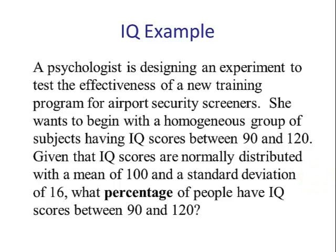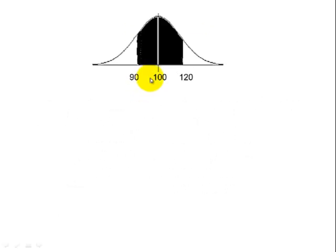Our first step is to draw a picture. Here's 90, there's 120, and we have a mean of 100. Now this is an in-between problem, so we have to convert the 90 to a z-score and the 120 to a z-score.